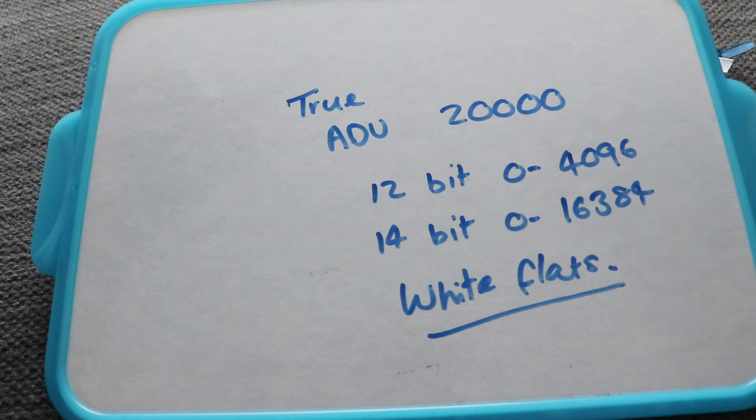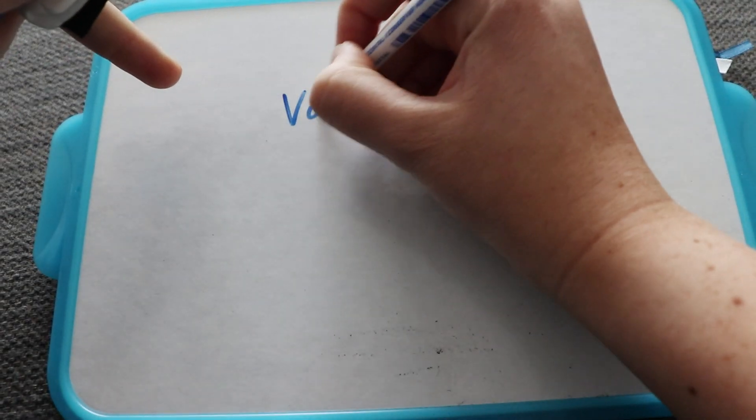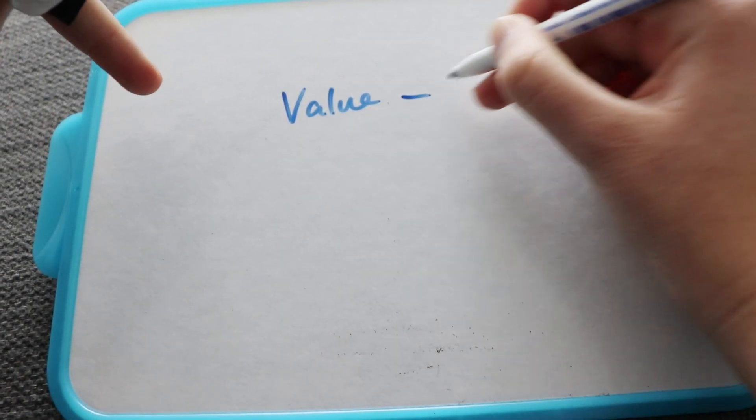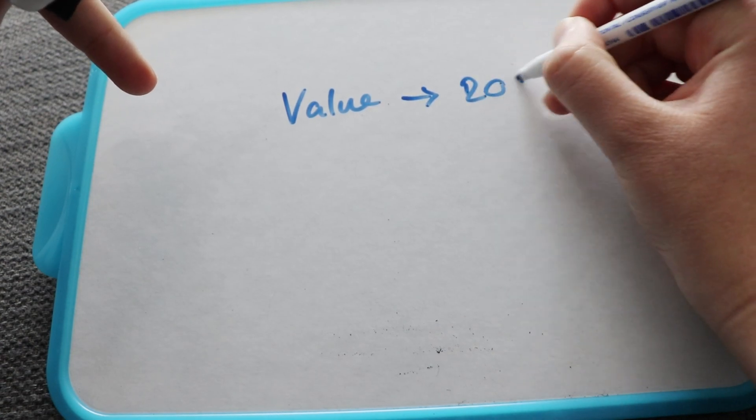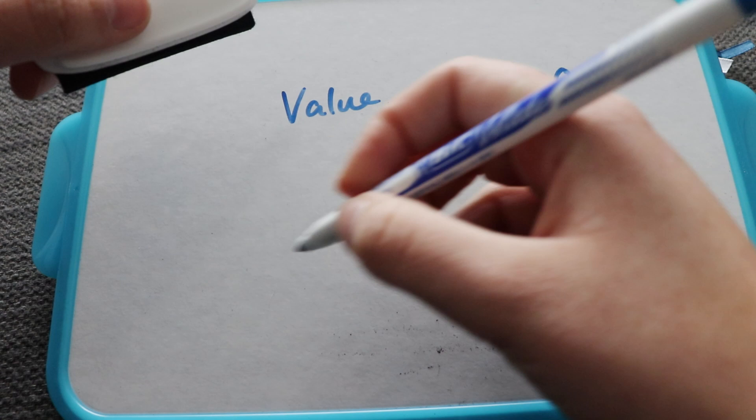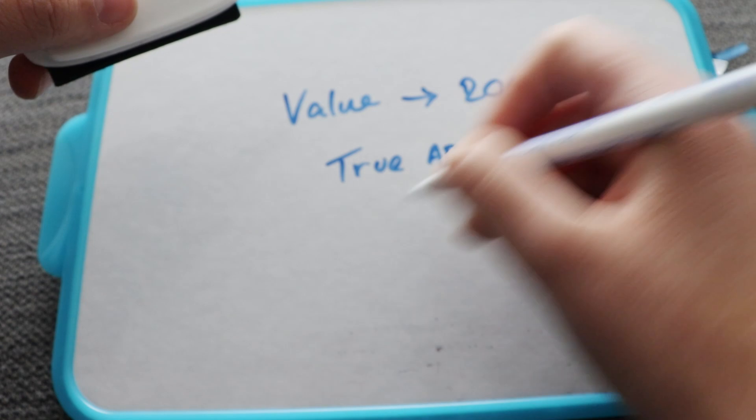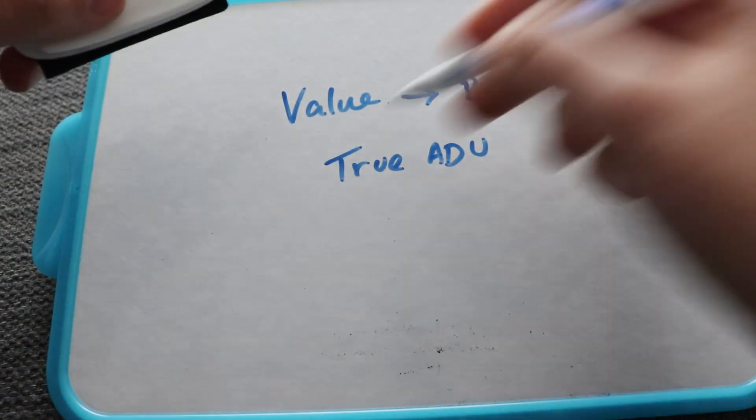However, if it's a 16 bit camera, that 20,000 is absolutely fine. In SharpCap, the top line where it says value, you can aim that for 20,000. But it must never be the true ADU on a 12 bit or 14 bit camera or a lower bit.